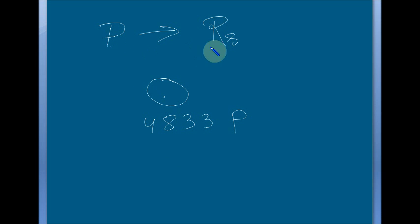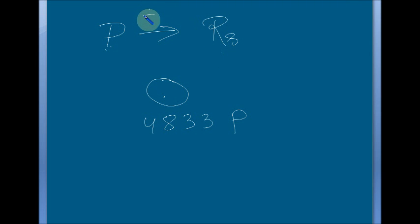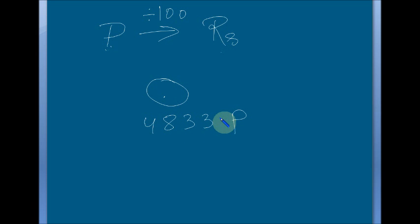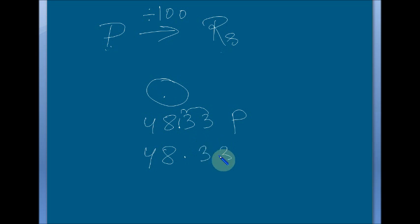Paise to Rupees — there are two methods. One is: Paise is a smaller quantity than Rupees, so in the long method I will divide it by 100. In the short method, what I will do is just write a decimal point, counting from the right side, after two digits — that means one, two — and here will be the decimal. That means 4,833 Paise becomes 48.33 Rupees.